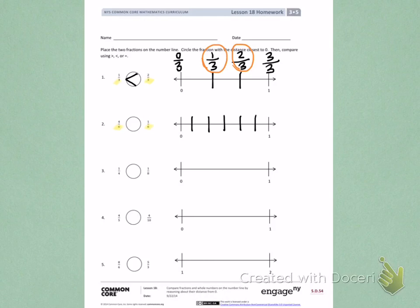Then I will label each fraction: 0 sixths, 1 sixth, 2 sixths, 3 sixths, 4 sixths, 5 sixths, and 6 sixths.